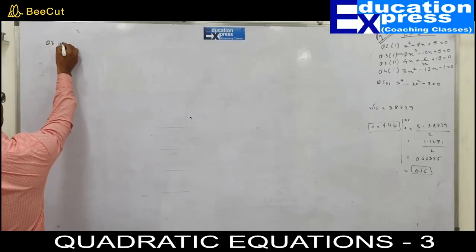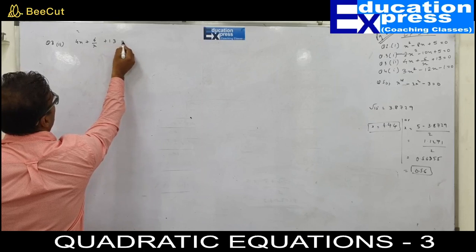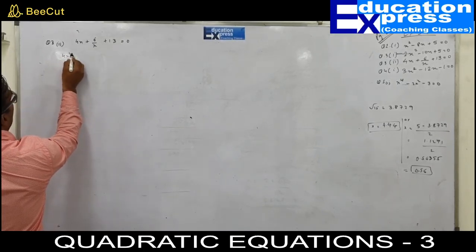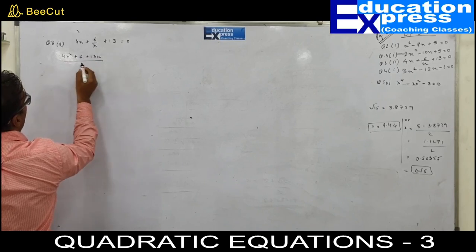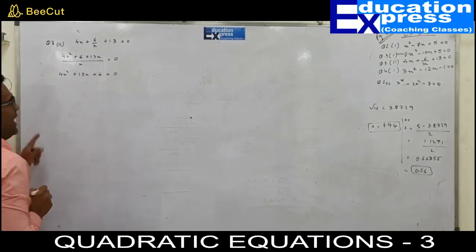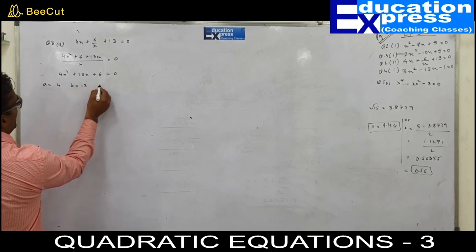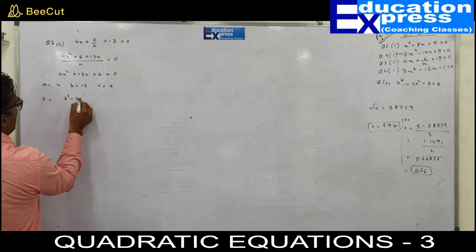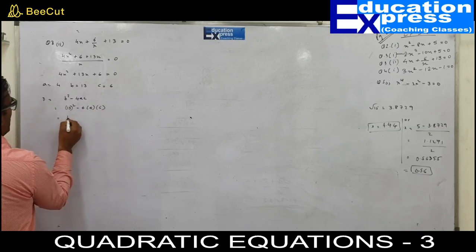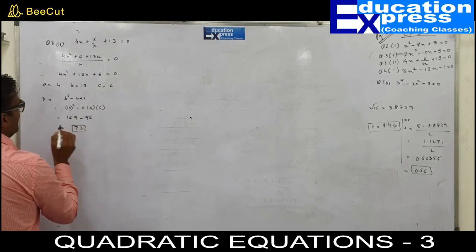Let's begin with question number 3, sub-question 2: 4x plus 6 upon x plus 13 equals to 0. This question involves a fraction. Let us take the LCM and eliminate the fraction. That gives 4x squared plus 6 plus 13x upon x equals to 0, so 4x squared plus 13x plus 6 equals to 0. Now the equation is in standard form. Value of a would be 4, b would be 13, c would be 6. Let us find the discriminant b squared minus 4ac.